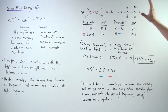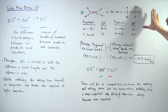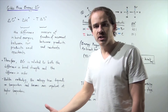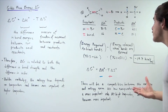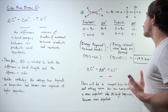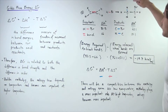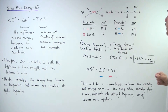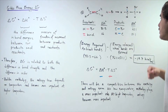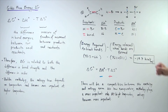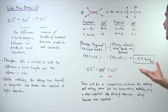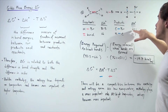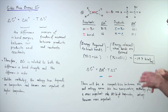Now let's go to our product side, where we have bonds being formed. Remember, whenever bonds are broken, energy needs to be inputted; whenever bonds are formed, energy is released. In this case, we have one H–C bond that is formed and one C–Br bond that is formed. The H–C bond releases 101.1 kcal/mol of energy, while the carbon–Br bond releases about 72.1 kcal/mol.